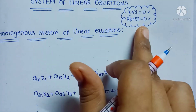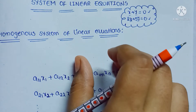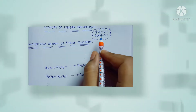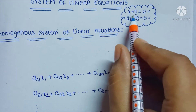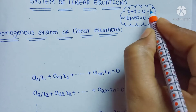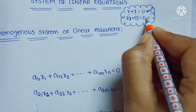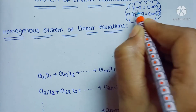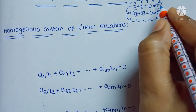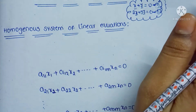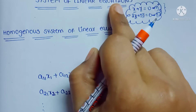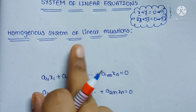If you see the definition of system of linear equations: a finite number of linear equations with a finite number of unknowns is said to be a system of linear equations. For example, x plus y equal to 0 and 2x plus 5y equal to 0 — here we have two equations with two unknowns.